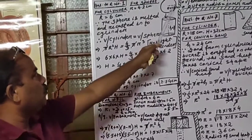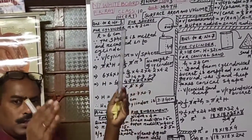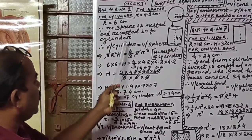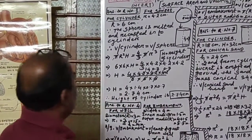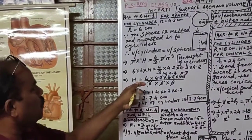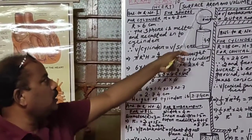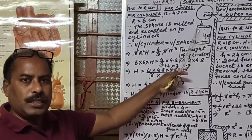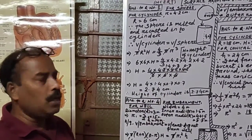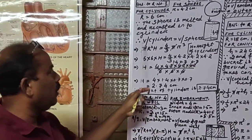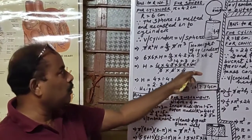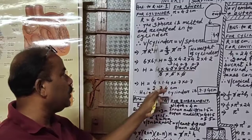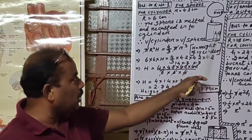For the cylinder, when it is recast into a cylindrical shape, its capital R = 6 cm, and height h is what we need to find. As the sphere is melted and recast into a cylinder, the volume of both bodies will be equal to each other. That is why we write: volume of cylinder = volume of sphere. We take volume of cylinder on the left side because we have to find the height of the cylinder.